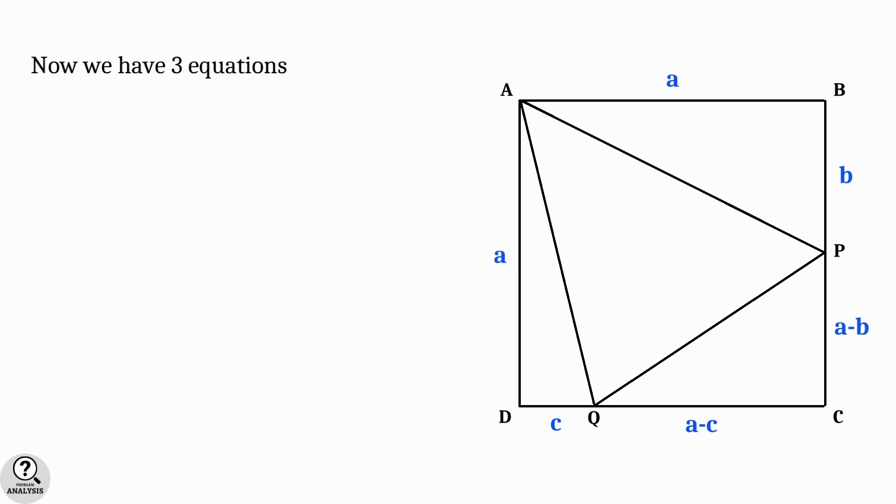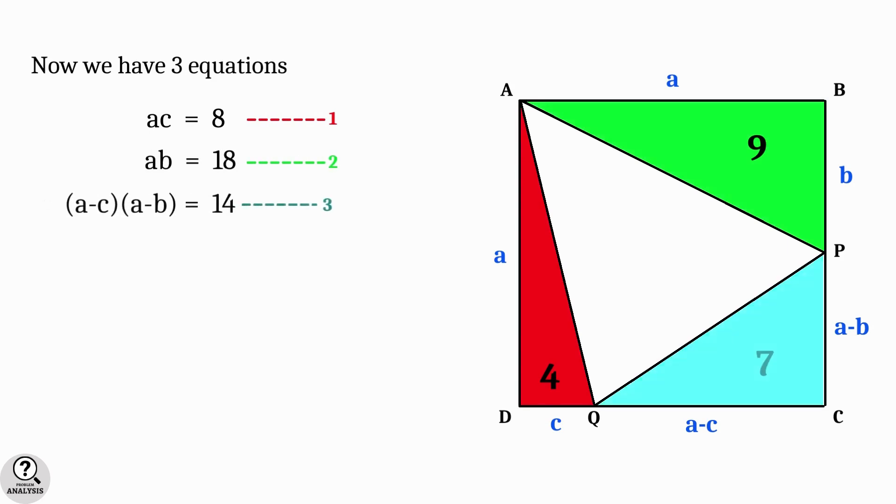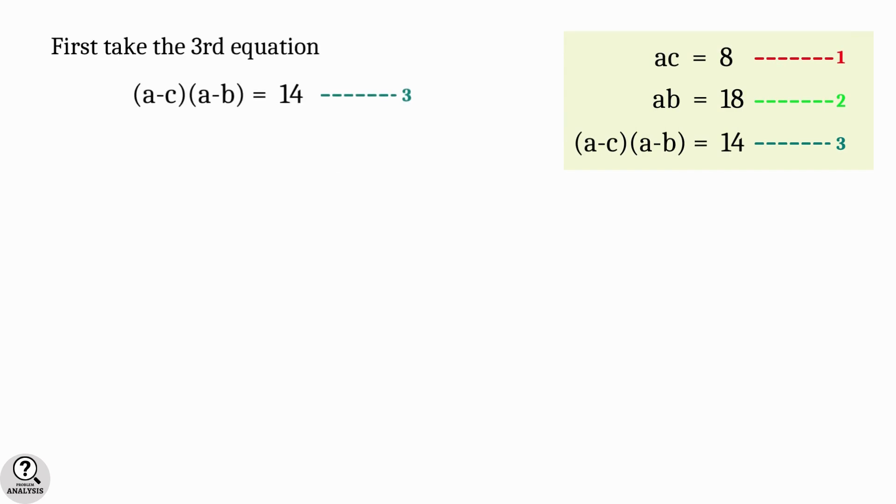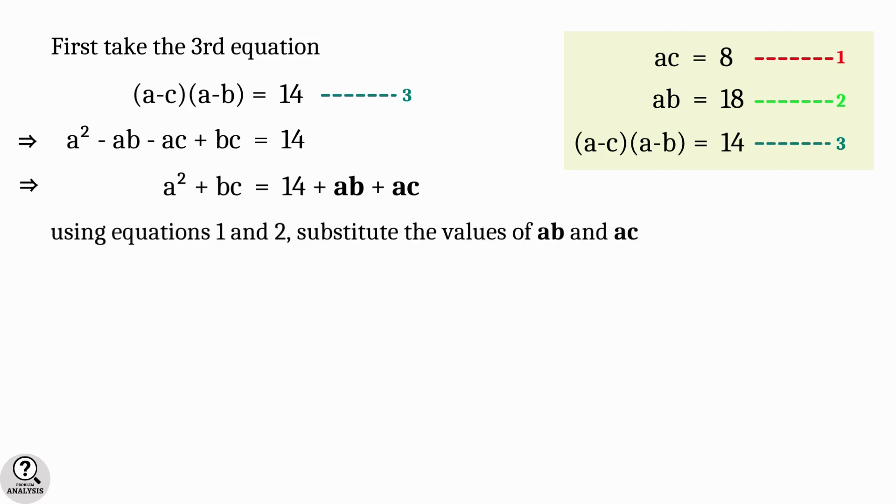Now we have 3 equations. ac equal to 8, ab equal to 18 and (a-c) into (a-b) equal to 14. First let me take the third equation (a-c) into (a-b) equal to 14. Opening the bracket and on further simplification, we will get a² plus bc equal to 14 plus ab plus ac. From the equations 1 and 2, substitute the values of ab and ac. Then what we get in final is, a² plus bc equal to 40. Put this as equation 4.